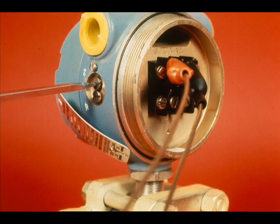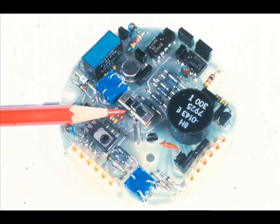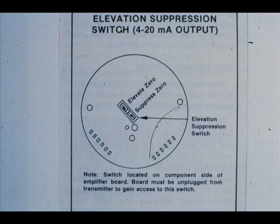The zero can be elevated or suppressed by turning the zero adjustment — check the instruction book for elevation and suppression limitations. Newer transmitters for the 4 to 20 milliamp systems have a three-position elevation/suppression switch on the amplifier board. The middle position allows normal amounts of elevation or suppression; to achieve large elevations or suppressions, move the switch to the elevate zero or suppress zero position.